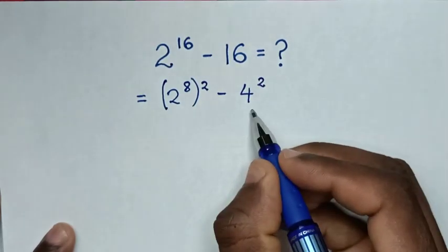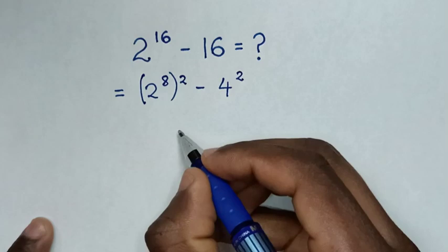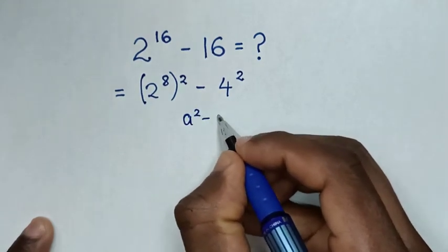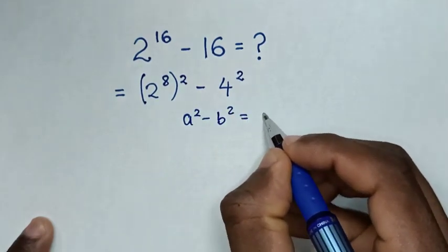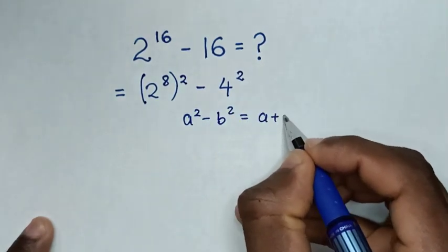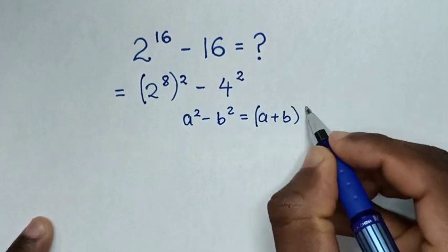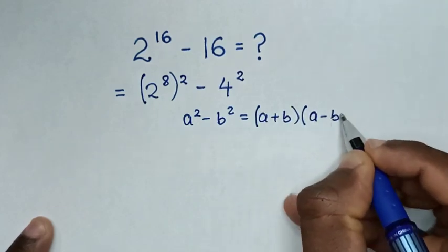Now, this is in the form of a perfect square, so we'll apply the rule: a squared minus b squared is equal to (a + b)(a - b).